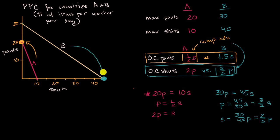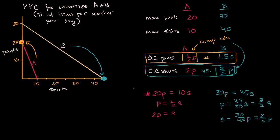Now you might be thinking: people can't just walk around wearing only shirts — they might get cold below their waist. And people don't want to only wear pants — they might get cold above their waist. So how can people in these countries get the other type of garment? The obvious answer is that if they specialize this way, they can trade.